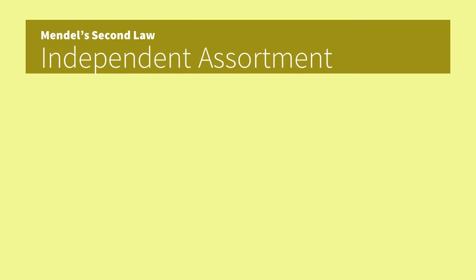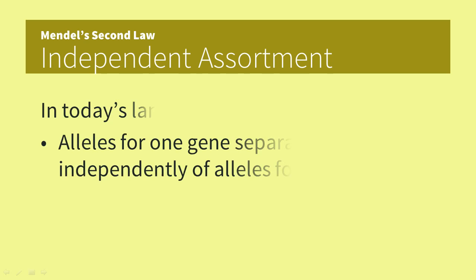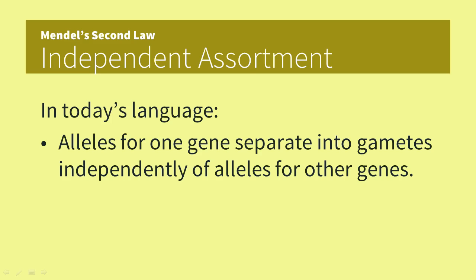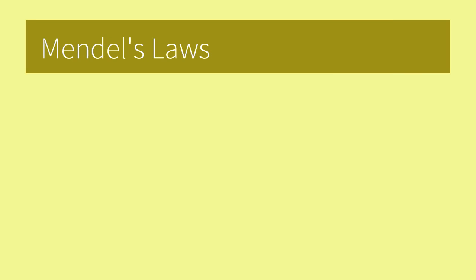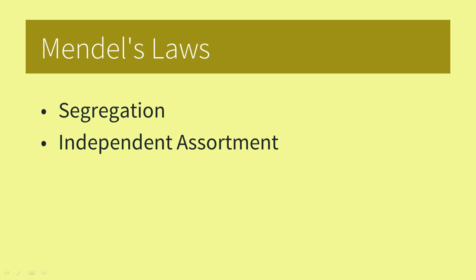Mendel reasoned that the character for seed color and seed form were independent of each other, so he came up with his second law: the law of independent assortment. Alleles for one gene separate into gametes independently of alleles for other genes. That is why he observed the two new varieties — round green and wrinkled yellow. Today Mendel is known not only for the principle of dominance but also for his two laws: segregation and independent assortment.